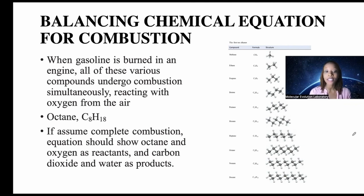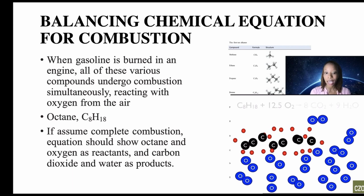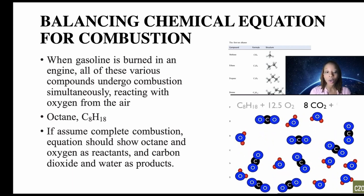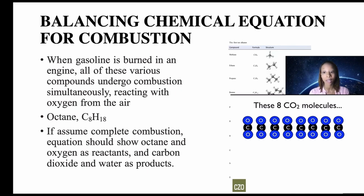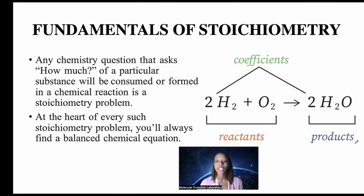When gasoline is burned in an engine, all of these various compounds undergo combustion simultaneously, reacting with oxygen from the air. Octane (C8H18), assuming complete combustion, shows octane and oxygen as reactants and carbon dioxide and water as products. To calculate any quantitative value from a chemical reaction — such as the amount of CO2 and water produced — we must first balance the equation by adding stoichiometric coefficients. Here the coefficients are two on both the reactant side and the product side.